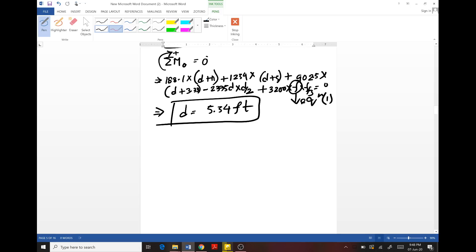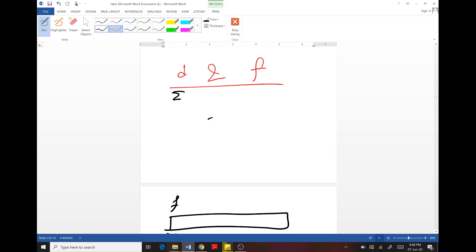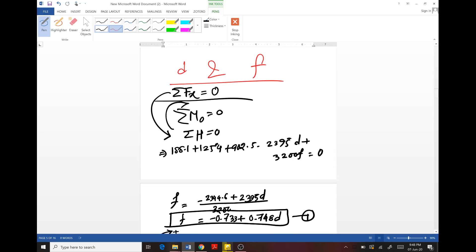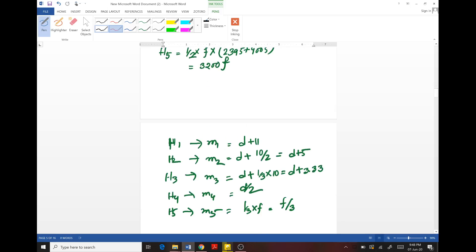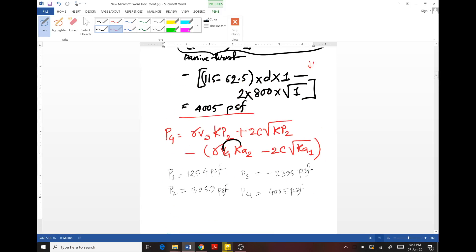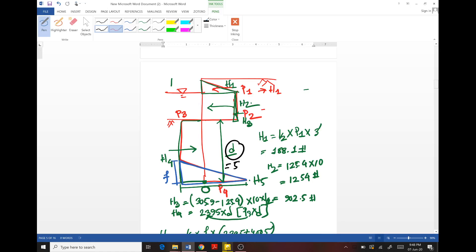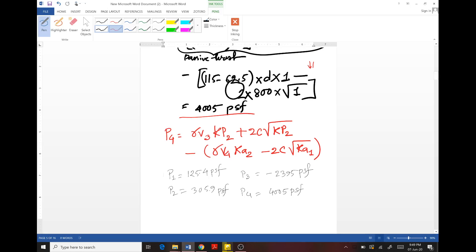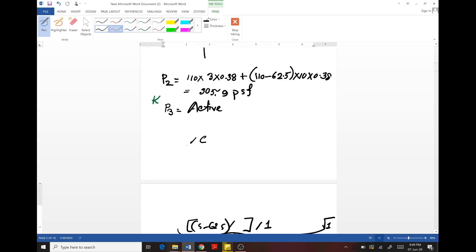Now this is the embedded depth of the sheet pile. D equals 5.54 feet, but as I have already discussed, this problem was solved for initial condition when undrained shear parameters were used.